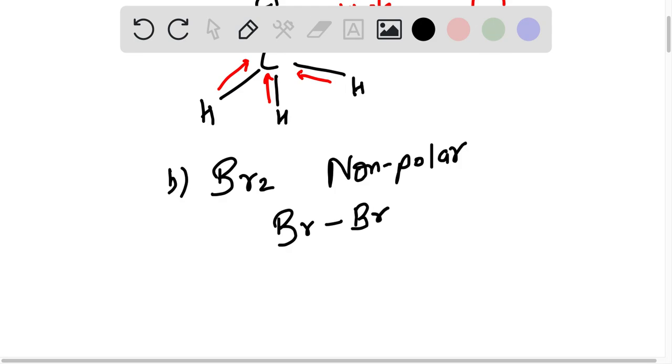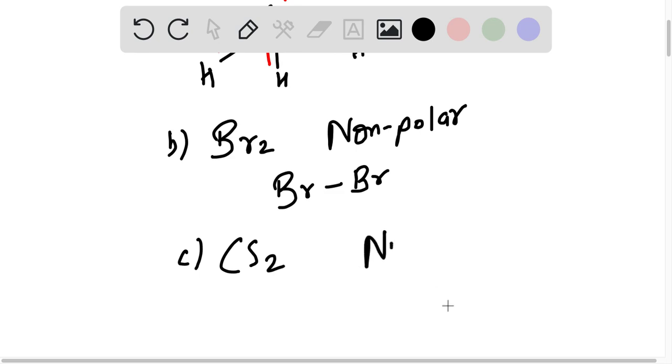Then we go to the third one. Third one is CS2. CS2 also is a non-polar molecule because here the distribution is like this, so these nullify each other. It's a non-polar molecule. I hope you understand, thank you so much.